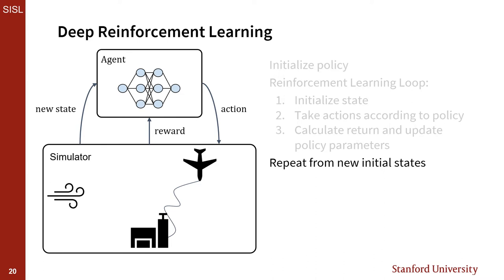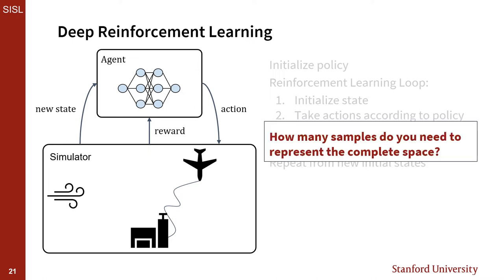Given that we want this policy to be entirely learned before entering the real world, a natural question arises: how many samples do we actually need from all possible starting states to completely represent the state space? We want to be sure the policy we generate will perform well no matter where we try to use it.